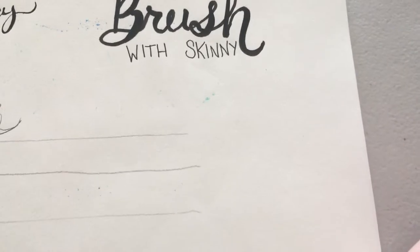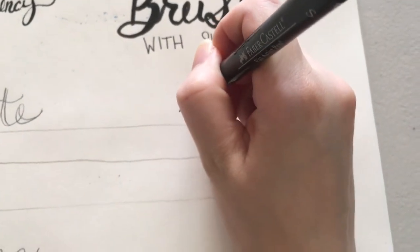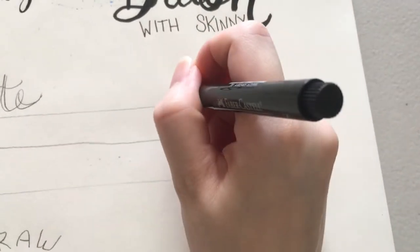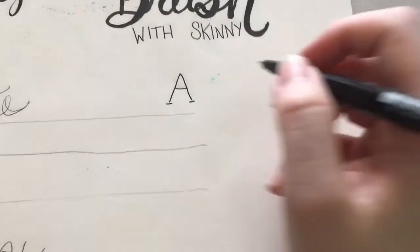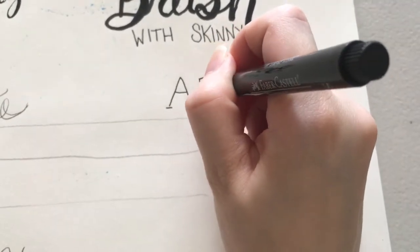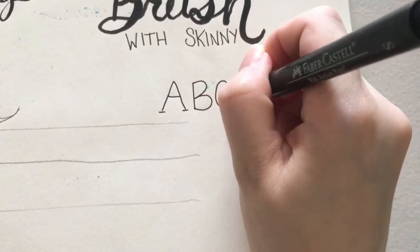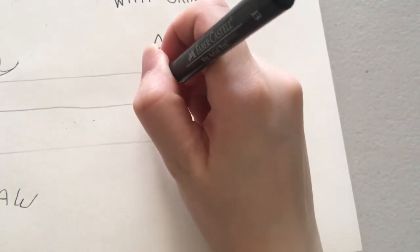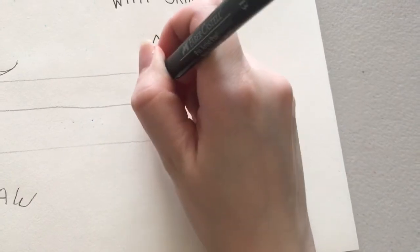Some fun effects that you can add to letters are to put a serif on them. So that is just the little feet that you sometimes see on letters like with Times New Roman. So you can do this with a skinny font like I'm doing or with a bolder marker.